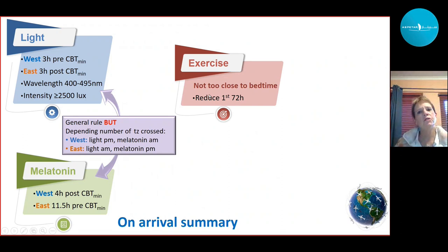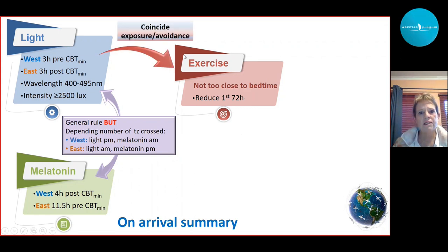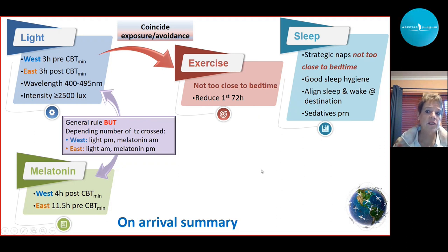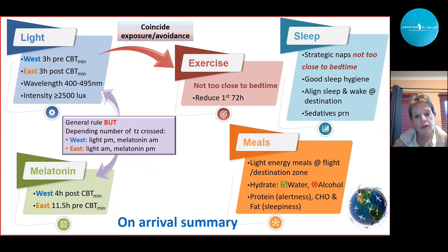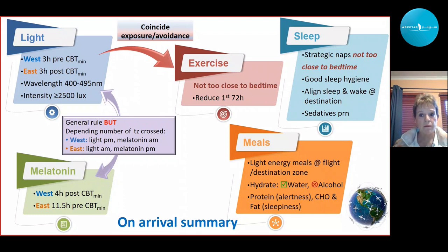Avoid exercise too close to bedtime. For the first two to three days, reduce training intensity, and try to coincide exercise sessions with light exposure windows. For strategic naps: take either fewer than 20 minutes or up to 90 minutes — one full sleep cycle. A 40-minute nap leaves you groggy from incomplete sleep cycling. Regarding meals at the destination time zone, macronutrients can help: proteins aid alertness, while carbohydrates and fats promote sleepiness.